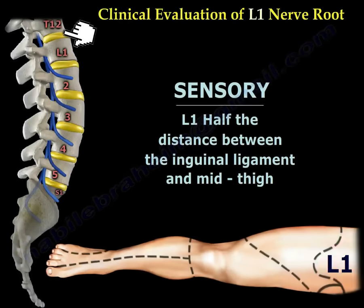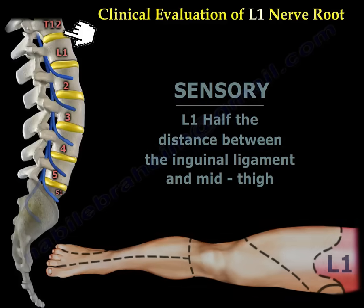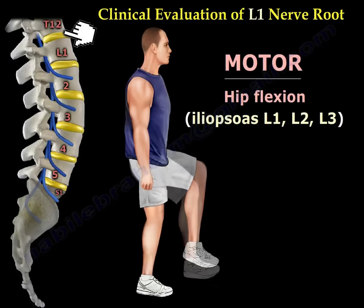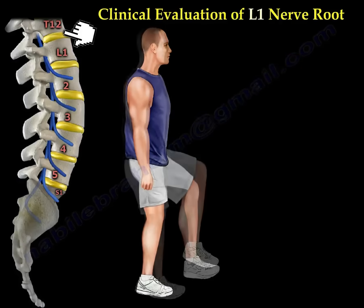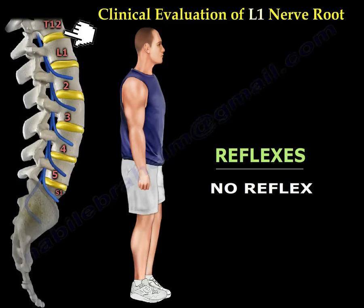We start with the sensory. The sensation of L1 is half the distance between the inguinal ligament and mid-thigh. Motor: hip flexion comes from the iliopsoas, L1, L2, and L3. There is no reflex for L1.